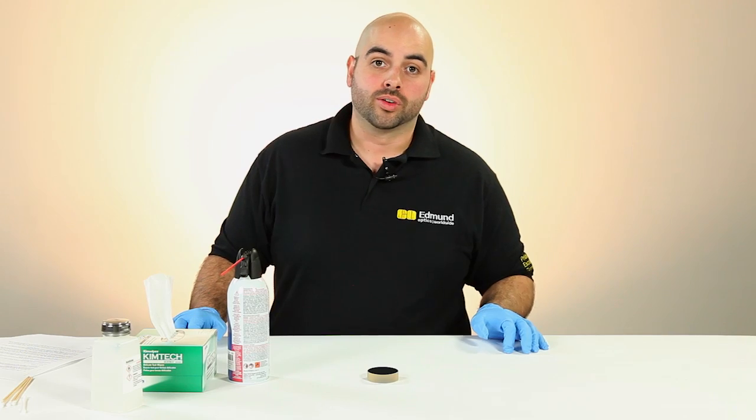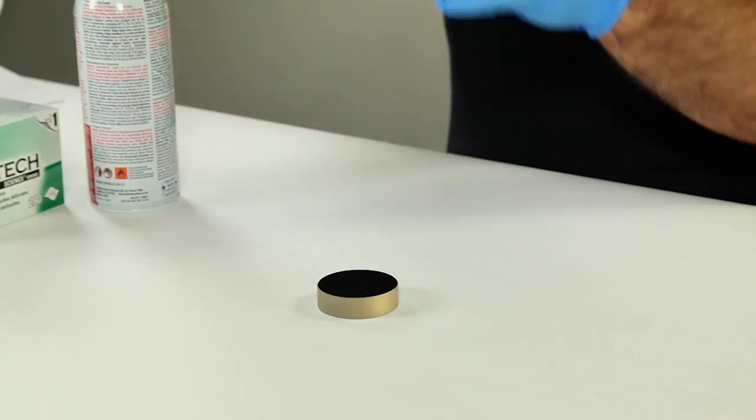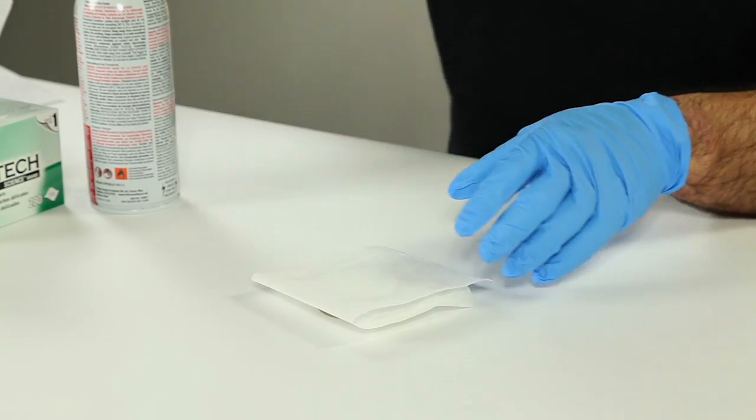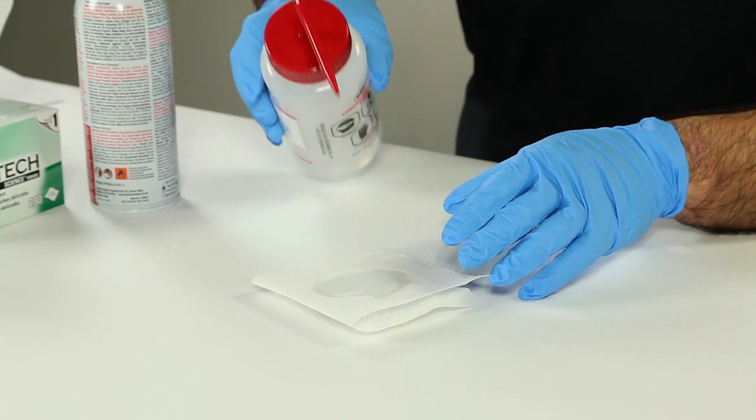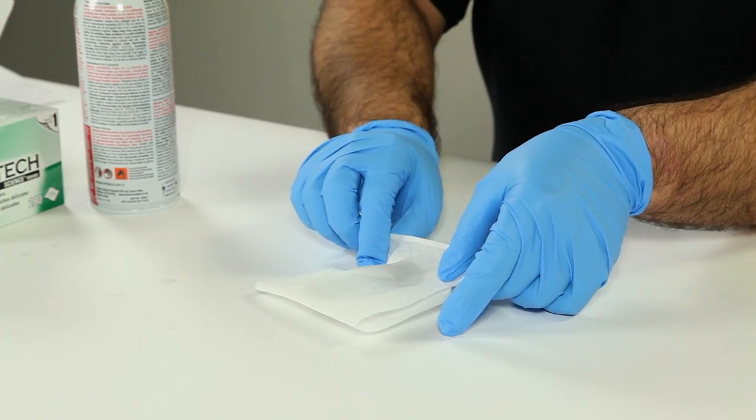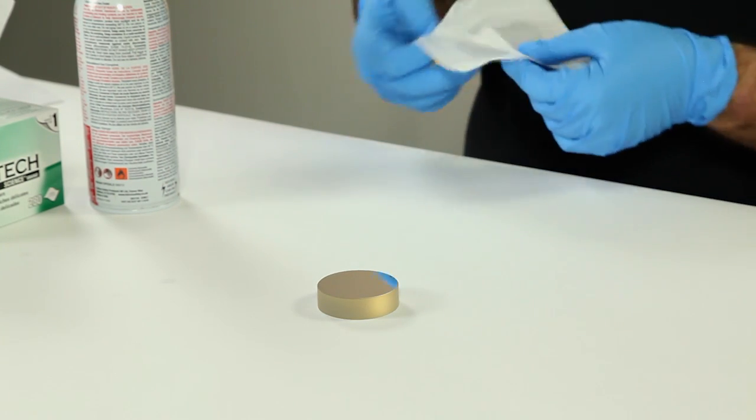Rather, for large flat optics like this, the lens tissue should be placed over the optic surface. Moisten the lens tissue with a few drops of acetone or alcohol and then drag the tissue across the surface. You will see the solvent evaporate as the tissue is removed. For best results, avoid overly saturating the tissue.